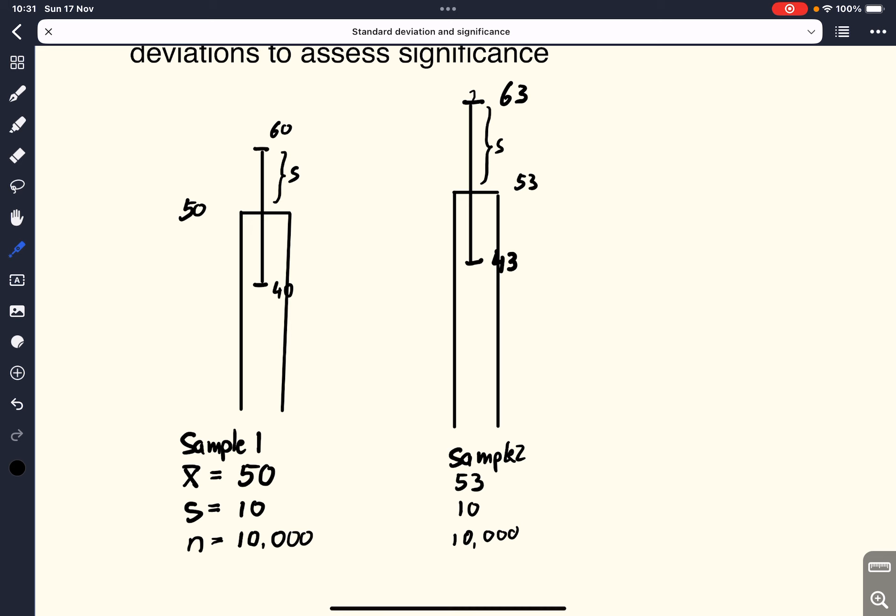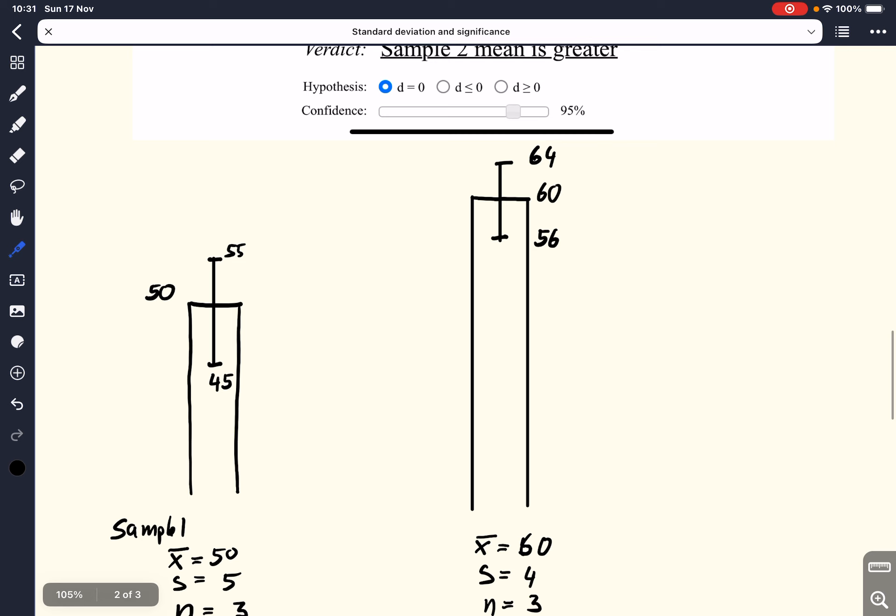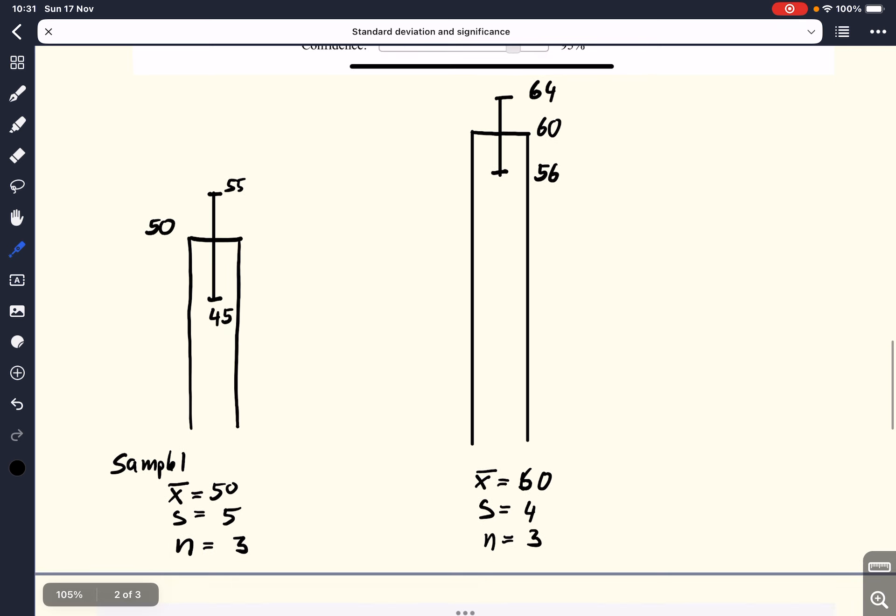Now, surely, if the error bars don't overlap, surely then we can say the samples are different. So let's take another example here. So here we have sample one. Sample one has a mean of 50, whatever this is, standard deviation of 5, and a sample size of 3. So here we've got 50 and a standard deviation. So our error bar would be 55 and 45.